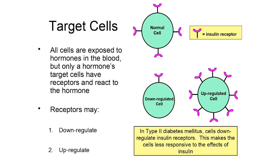When you're in a down-regulated state, that is what type 2 diabetes is — your cells aren't responsive to insulin and aren't able to clear sugar from the blood when insulin is released. At that point you may be dependent on medications like metformin or even insulin injections to try and raise insulin levels enough to clear sugar from the blood.